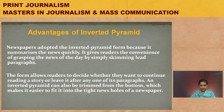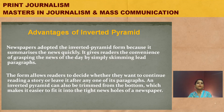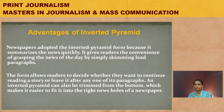This is the inverted pyramid structure. It gives readers freedom — they have the option to read one paragraph or decide not to continue. Because they understand the news in one paragraph. And if they are interested and found the first paragraph interesting, they can go through the whole story. But still, if they don't want to read the whole news, by reading the lead they will get what the news is all about. An inverted pyramid can also be trimmed from the bottom, which makes it easier to fit into the tight news holes of a newspaper.